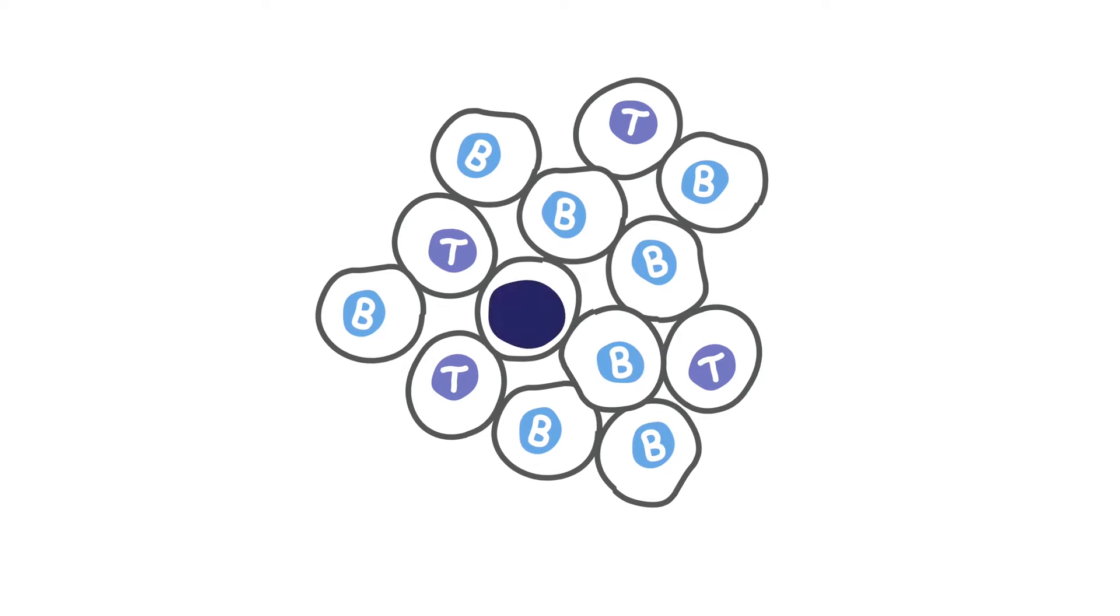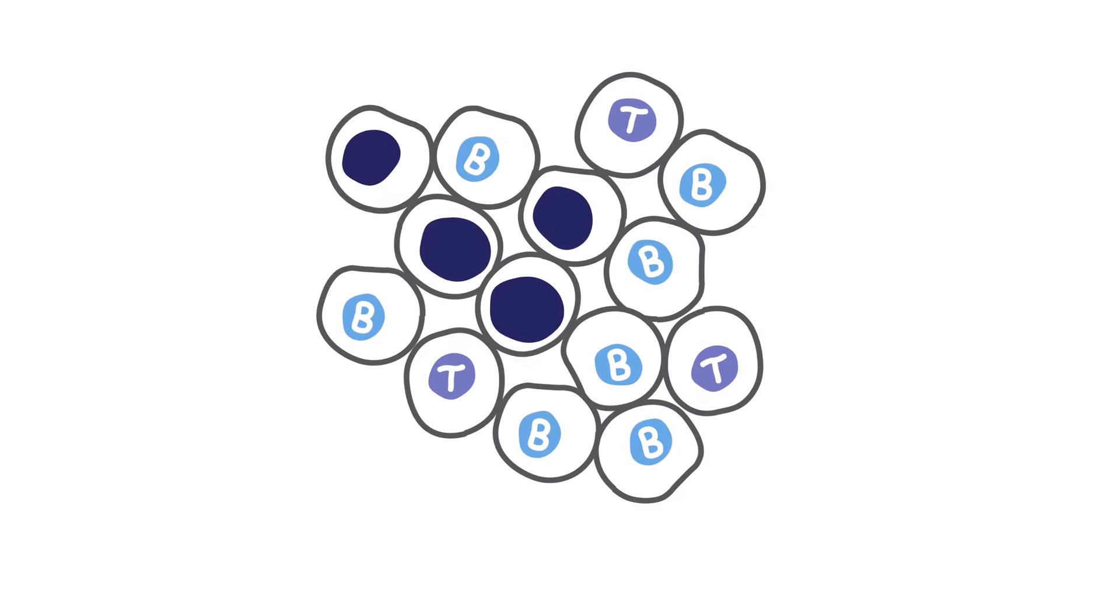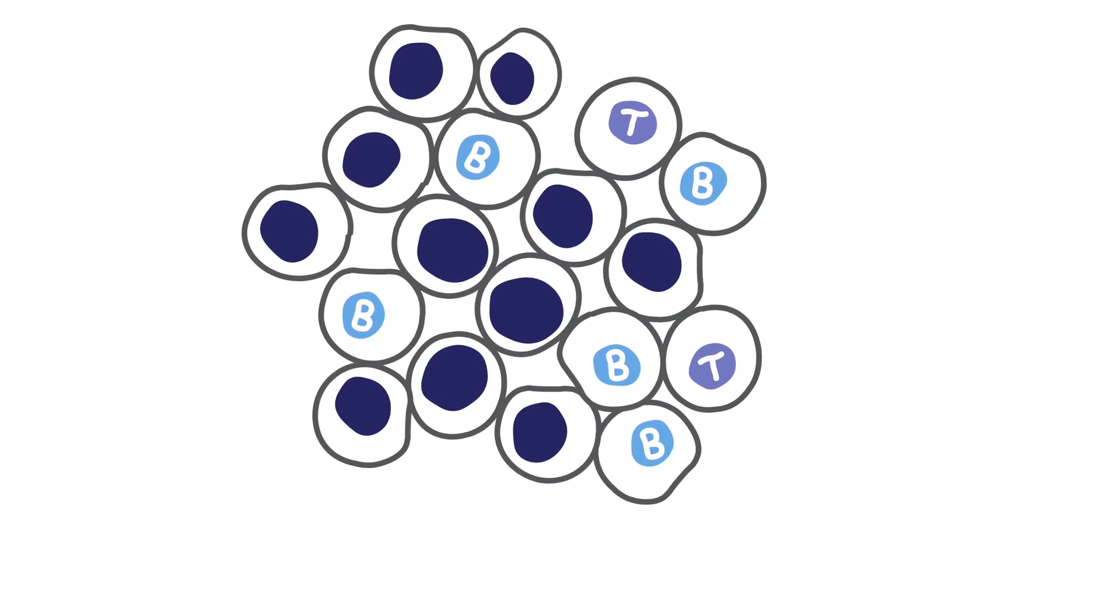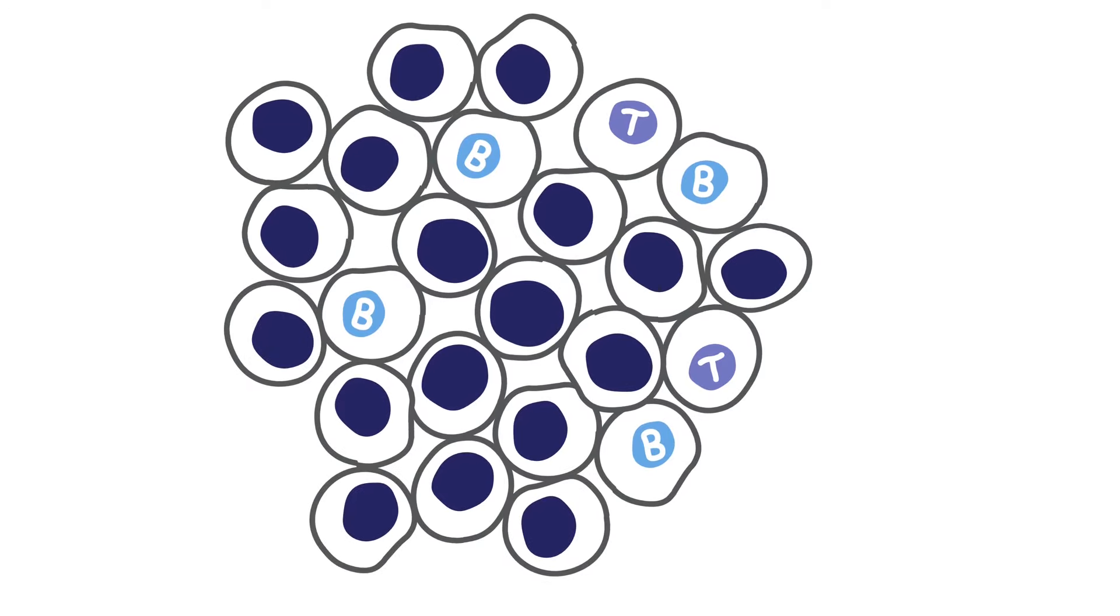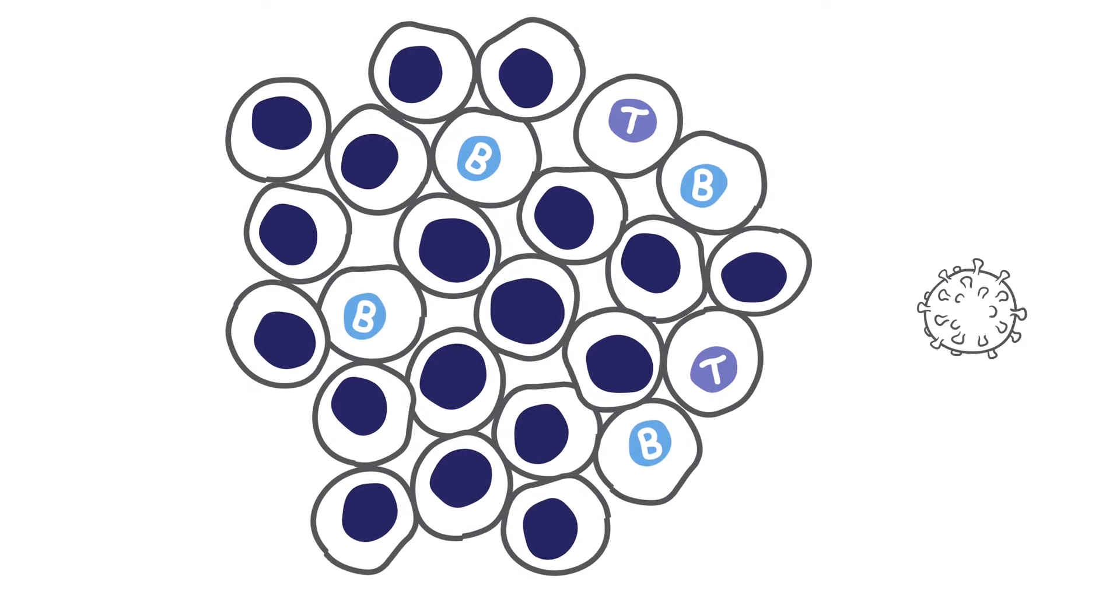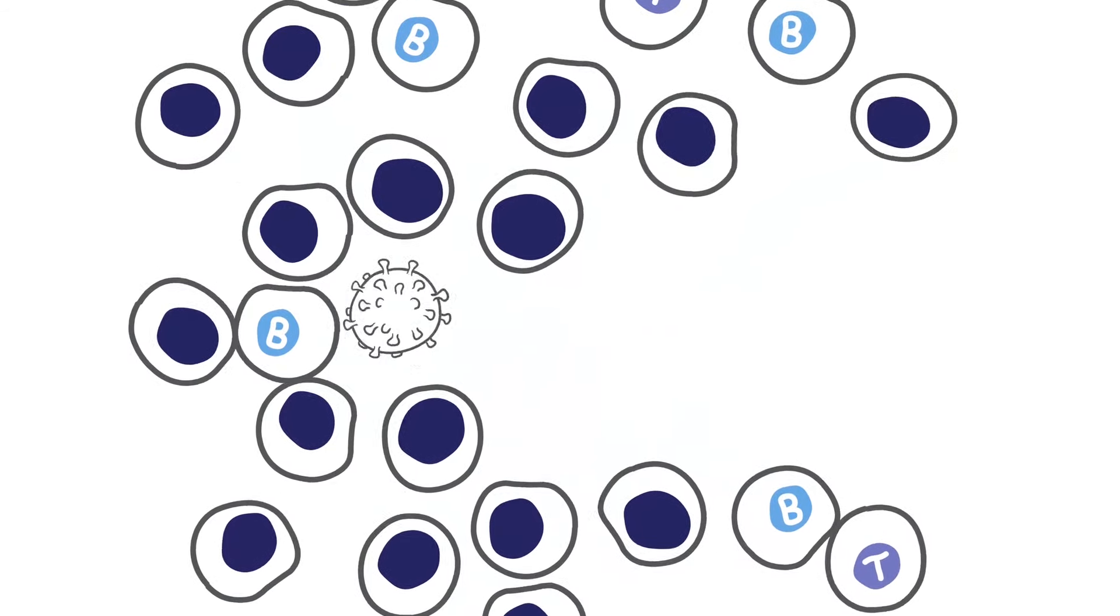When malignant transformation occurs, these clones can acquire a mutation which enables uncontrolled proliferation. They may quickly expand to become the dominant clone, impacting the adaptive immune system's normal functions and causing disease symptoms.